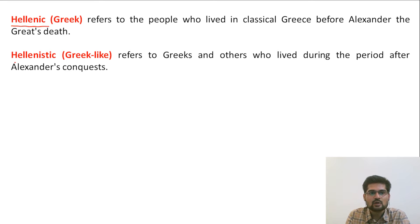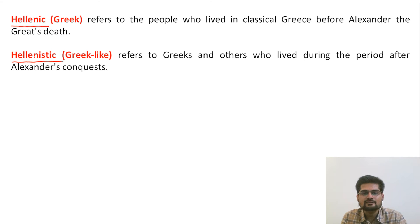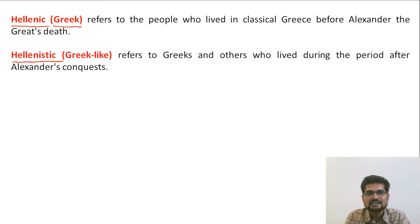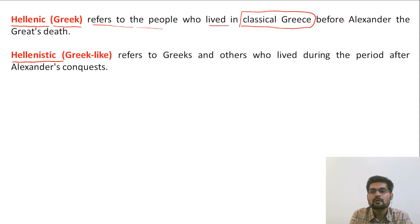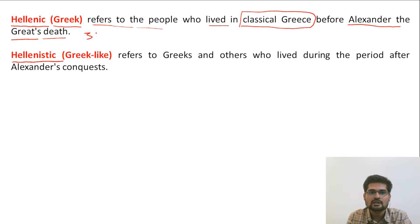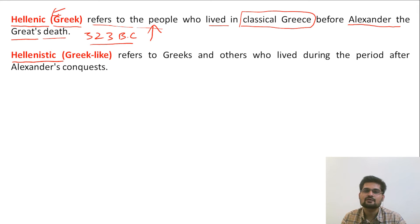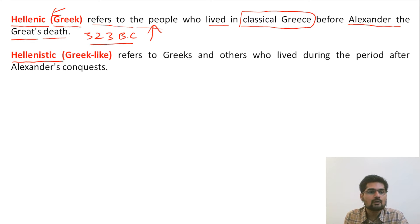One is called Hellenic and the other is called Hellenistic. What is the difference between these two? Many times when you start reading different books you'll come across these two terminologies. Hellenic, which is related to Greek, refers to the people who lived in classical Greece — the older part, which is before Alexander the Great's death, that is about 323 BC. Hellenic literally means very old whose origins are not known clearly.